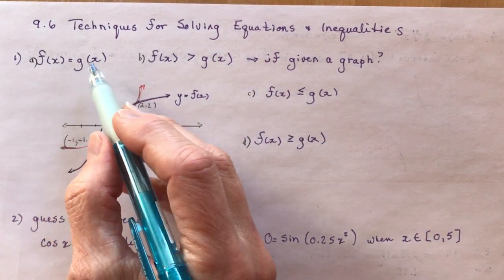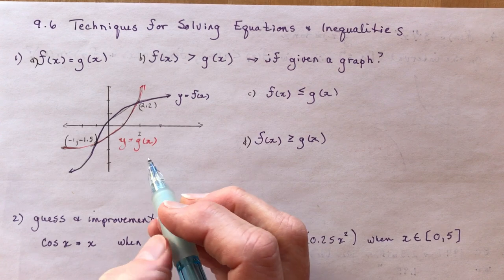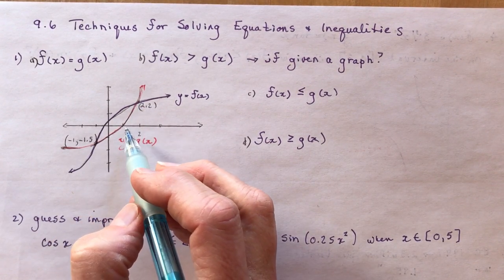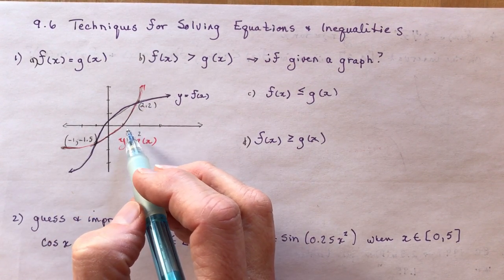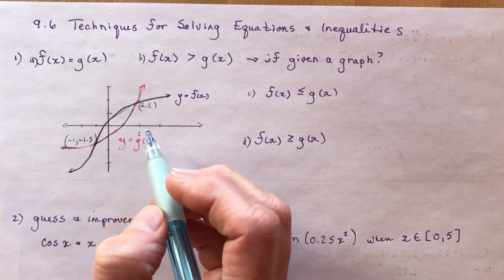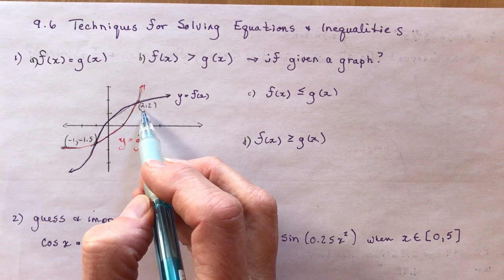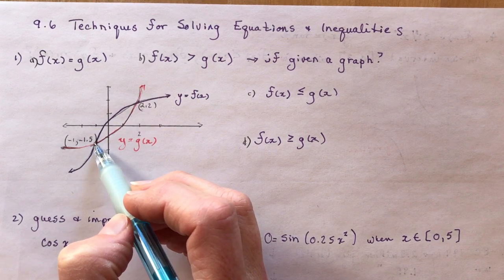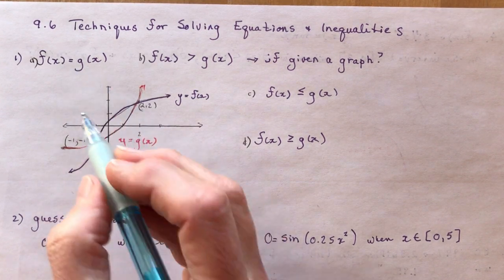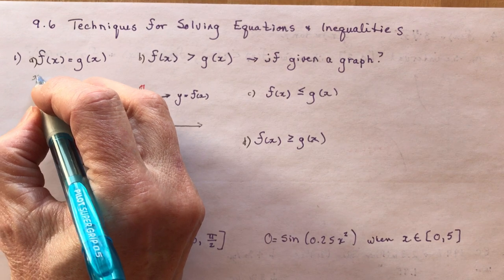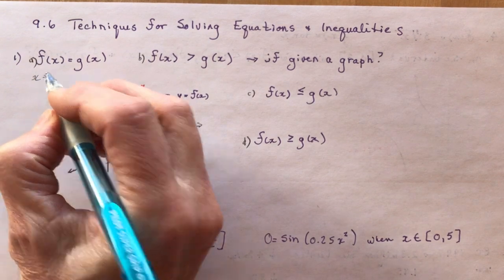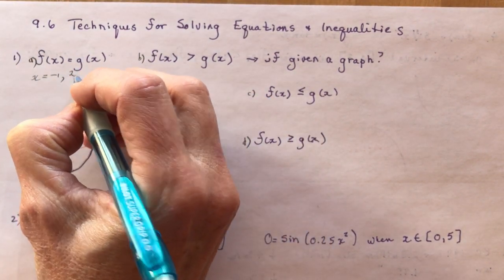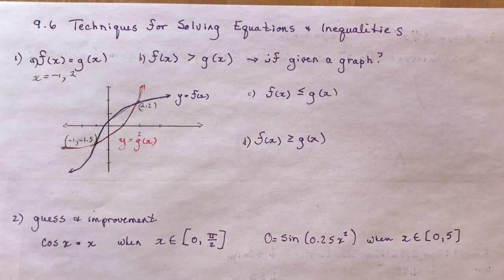Where is f(x) equal to g(x)? You just need to find these two intersection points. You have to estimate them because they don't give exact values, but this is the point (2, 2) and this is the point (-1, -1.5). So f(x) equals g(x) when x equals -1 and 2.